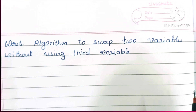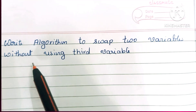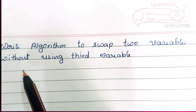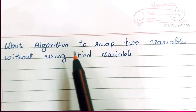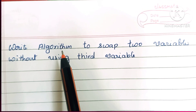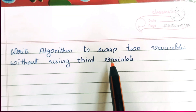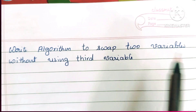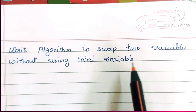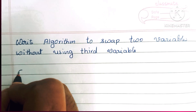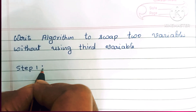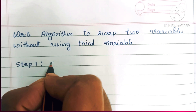In this video we are going to learn how to write an algorithm to swap two variables without using a third variable. An algorithm is a step-by-step process to solve a problem. Here we have to swap two variables, meaning interchanging the two variable values without using a third variable.